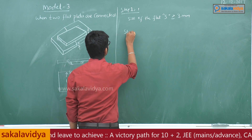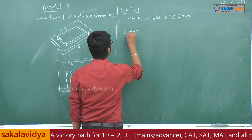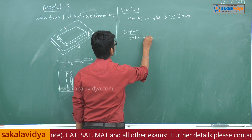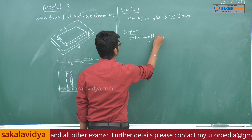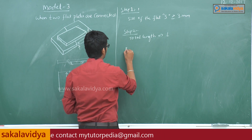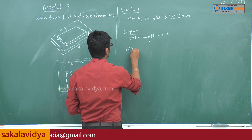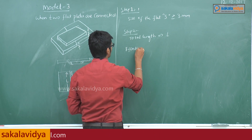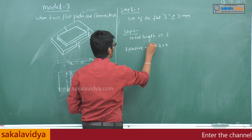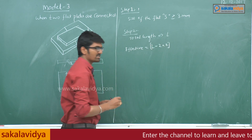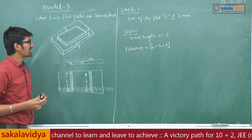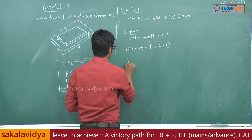Step 2: total length is equal to L. From that, we need to find effective length. Effective length is equal to L minus 2 times S, because we are having two lengths. So we need to find the effective length.